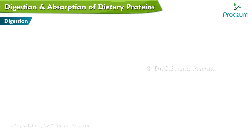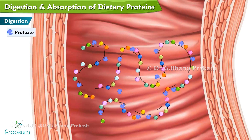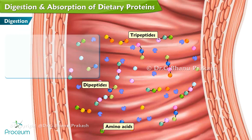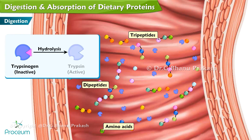In the duodenum, several proteases act in combination to digest proteins into amino acids, or dipeptides and tripeptides. Like gastric pepsinogens, pancreatic enzymes are secreted as inactive proenzymes, which are activated by hydrolysis of a peptide bond.